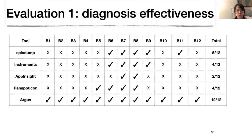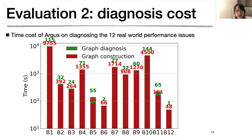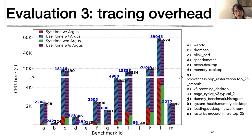We evaluate the diagnosis performance of Argus. The y-axis is time in seconds and the x-axis is the ID of 12 real-world performance issues. Most of the diagnosis time is spent on graph construction, ranging from within a minute to several hours depending on the size of tracing logs. The diagnosis algorithm itself is fast, finishing within three minutes. For system overhead, we evaluate with Chromium benchmarks using always-on tracers. The overall system overhead is within 5%.